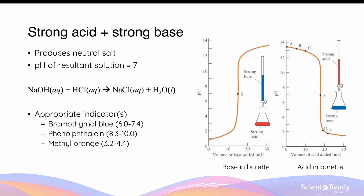A strong acid and strong base titration always produces a neutral salt, which means at the equivalence point, the pH of the resulting solution in the conical flask will always be 7. An example is the titration between sodium hydroxide and hydrochloric acid, which forms the neutral salt sodium chloride. On the titration graph, if we have the acid in the conical flask, the pH of the solution will start off very low, and as the base is being added from the burette, the pH slowly increases. When it's about to hit the equivalence point, the pH increases very steeply. At a pH of 7, marked by the letter S in this diagram, this is where the equivalence point of the titration occurs.